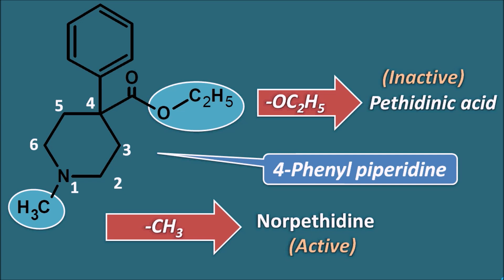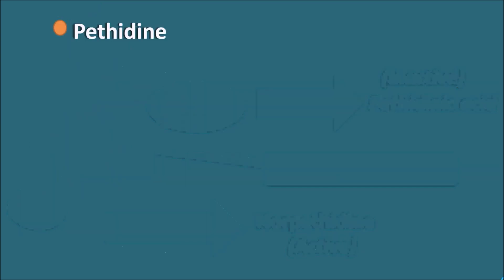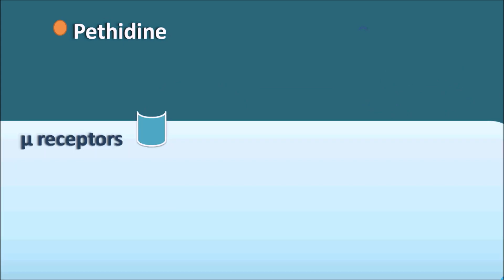Pethidine as well as Nor-Pethidine can produce analgesic action, thereby controlling pain. Pethidine acts on the mu receptors, and when the drug binds to these receptors it opens the potassium channels.